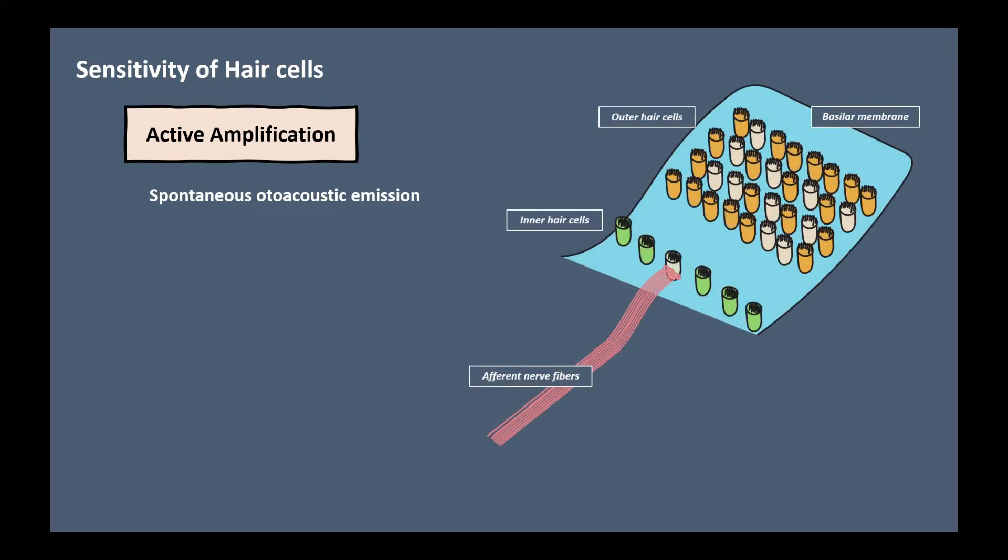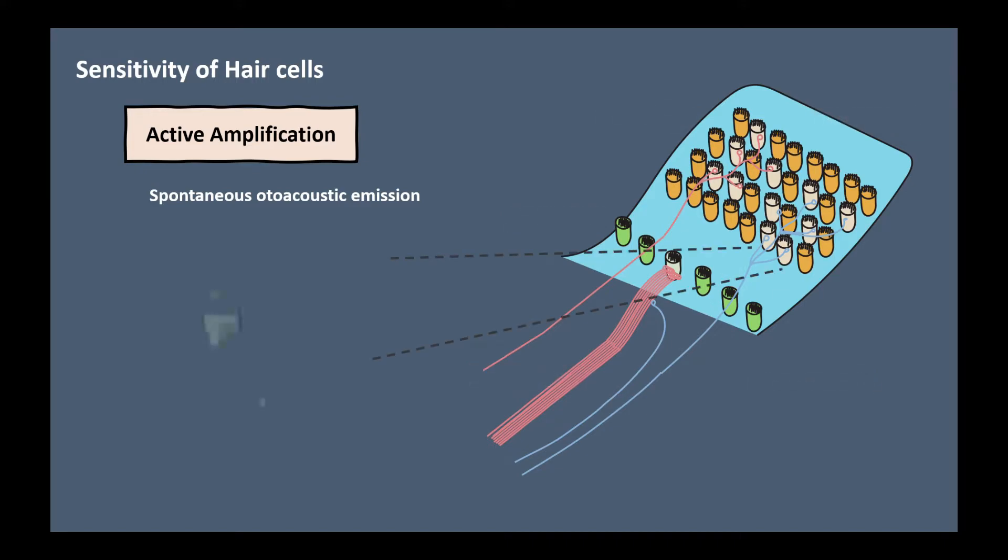Afferent nerve fibers are broadly distributed on inner hair cells and have a minimum connection with the outer hair cells. Instead, a large number of efferent nerve fibers are distributed in the outer hair cells. When efferent nerve fibers are activated, the outer hair cells are stretched and the hair bundle will be deflected. Again, the deflection of the hair bundle, which is the mechanical stimulus, will transduce to receptor potential. This phenomenon causes the voltage-induced movement of the outer hair cells. And this movement can cause the enhanced movement of the basilar membrane, which leads to the amplification of the cochlea.